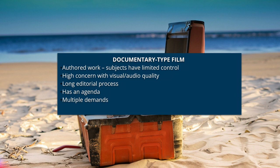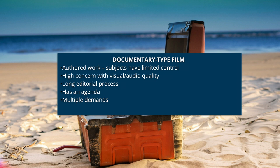When we talk about film and video in most of the work we're doing, I've categorised this as documentary-type film. Firstly, this type of film is often authored — somebody has overall creative, narrative, and editorial control. It's being designed and developed by an individual or a very small group of people. Traditionally our film and video work has a very high concern with visual and audio quality, and there may be a long editorial process with scripting and planning months before filming.